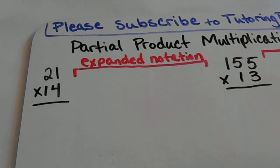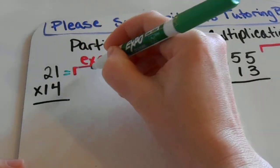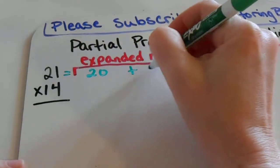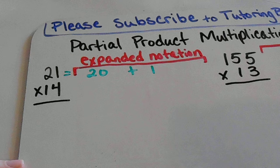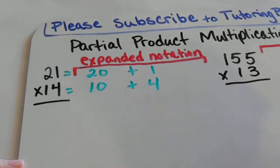We're going to start with this multiplication problem here, 21 times 14. We're going to break that 21 down into its expanded form which just means 20 plus 1 and then we're going to take the 14 and do the same thing. We're going to break it down into its tens plus its ones.